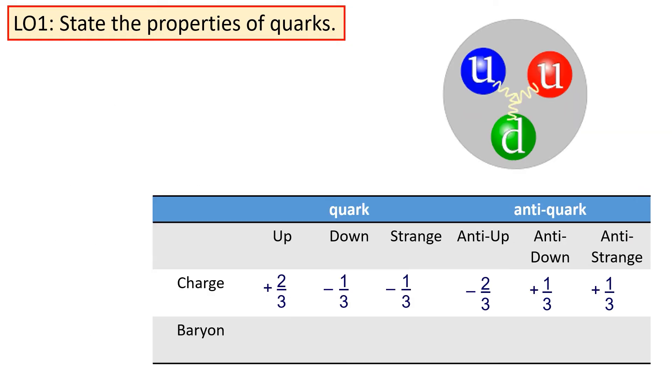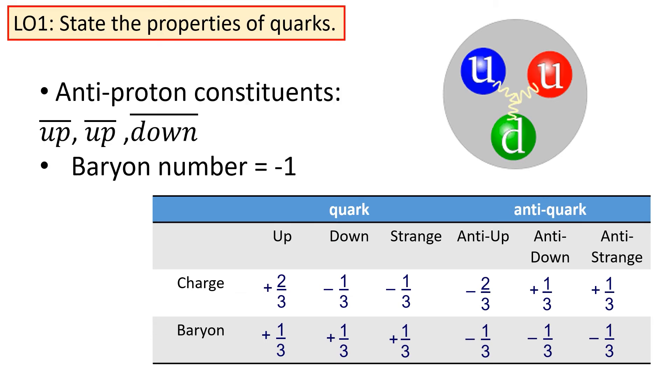There are three quarks we should know about for the exam: up, down, and strange, as well as their anti-quark counterparts: anti-up, anti-down, anti-strange. The quark and the anti-quark would have the opposite charge. Similarly, if each quark has a baryon number of plus a third, each anti-quark has a baryon number of minus a third.